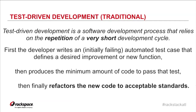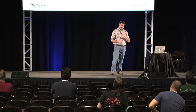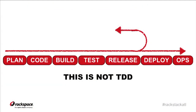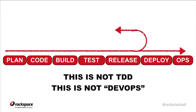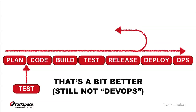Traditional TDD is currently under fire in the development community as not relevant anymore — kind of old and busted. Today we're going to talk about some new hotness. Also, by the way, this is not CDD, and it's also not DevOps. The plan-code-build-test-release-deploy-operations toolchain is a workflow method to achieve something like DevOps, but DevOps is more of a cultural movement within your organization to achieve this workflow in a meaningful, interdependent way.